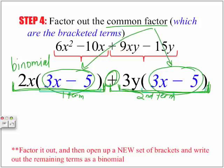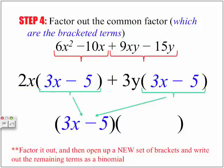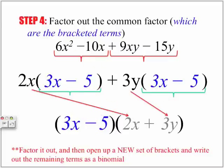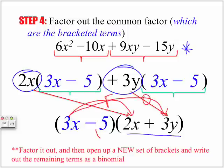Factor out the common factor and open up a new set of brackets, writing the remaining terms as a binomial. We factor out 3x minus 5, open up a new set of brackets, and in that second set of brackets we put the remaining terms: the 2x from the first group and the positive 3y from the second group. Those remaining terms make up the second binomial. To get back to the original expression, we would multiply the two binomials using the FOIL method — first, outer, inner, last.